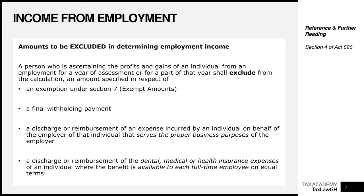Now that we know what to include, let's look at what to exclude. It is important to remember the exclusions — it is easy to include everything unless it is supposed to be excluded. The first exclusion is any exemption under Section 7 of the Act — the exempt amounts. If you watched our preceding video on basic principles of income tax, we covered all the exempt items extensively. Any amount that is exempt under Section 7 and relates to your employment income should be excluded.